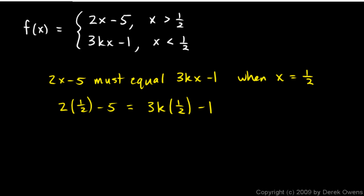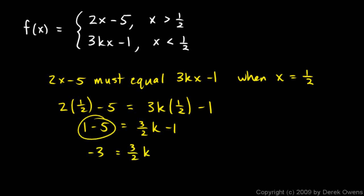And now we're down to basically an algebra 1 problem. We can solve this for k. So this is 1 minus 5 equals 3 halves k minus 1. And add 1 to each side and that gives us negative 3 is equal to 3 halves k. I combined those two and I added 1 to get rid of this. And then you can find k. k equals negative 2 and that's the answer.